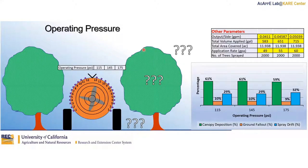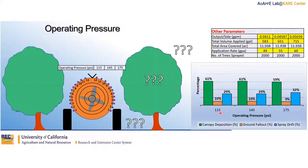Regarding operating pressure: increasing operating pressure also increases the volume of spray being discharged but tends to decrease droplet size. We learn that increasing operating pressure from 115 psi to 175 psi decreases the percentage deposition in favor of spray drift.